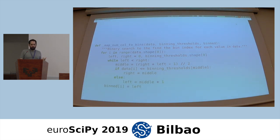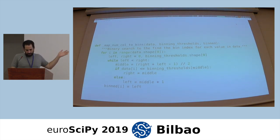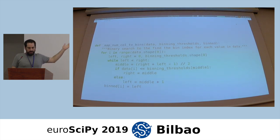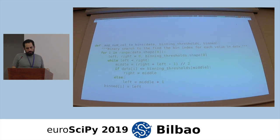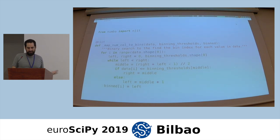To give you a feeling of what the code looks like with Numba — this is the code that does the binning of the data, converting continuous variables into a discrete list of integers with different binning thresholds pre-computed before. This is essentially a dichotomy: you look for the right bin in a list. In Python, this involves nested loops which is really inefficient because Python is an interpreted language. With Numba, you just add an NGIT compiler declaration, and this code runs as fast as the C++ version of LightGBM.